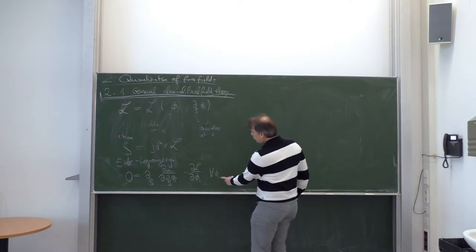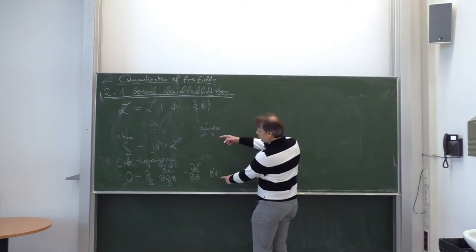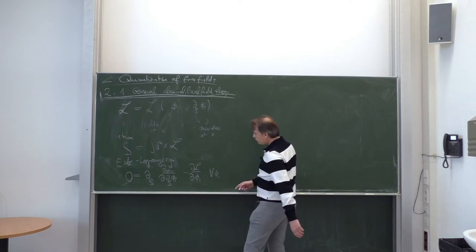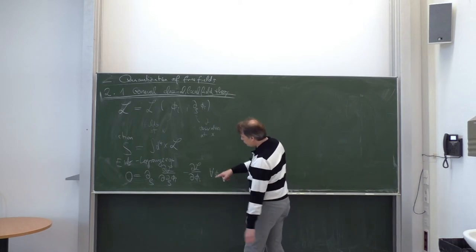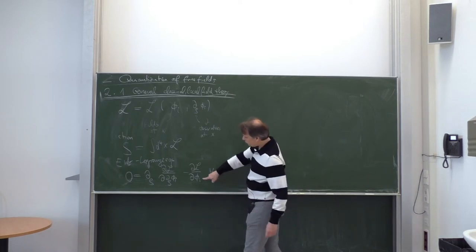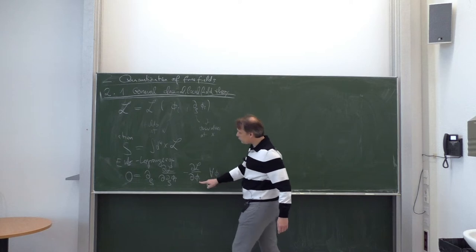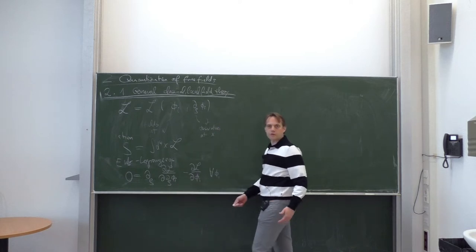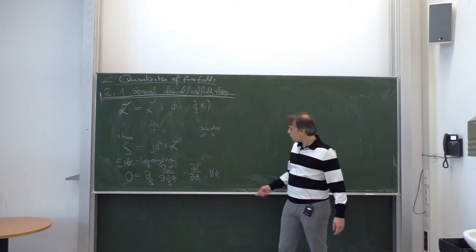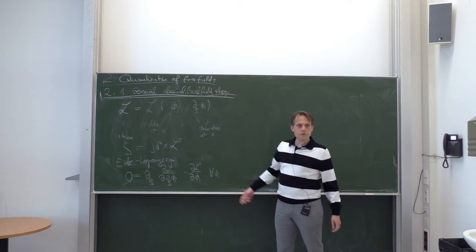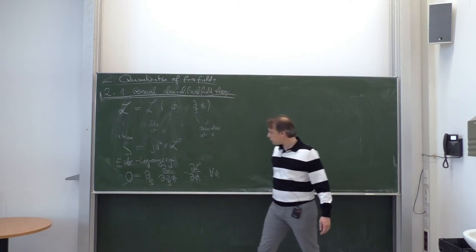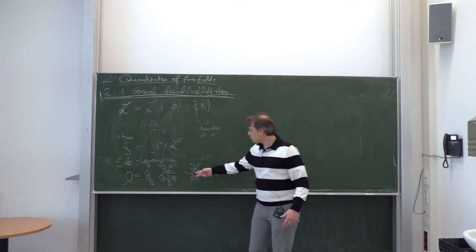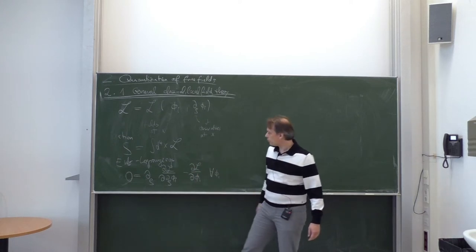These Euler-Lagrange equations hold for all fields phi_i. You select one field phi_i, and then take derivatives with respect to phi_i and d_rho phi_i. For every field in your theory, there is one such Lagrange equation which combines derivative and non-derivative terms.